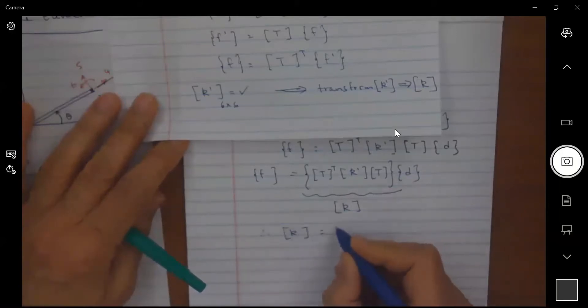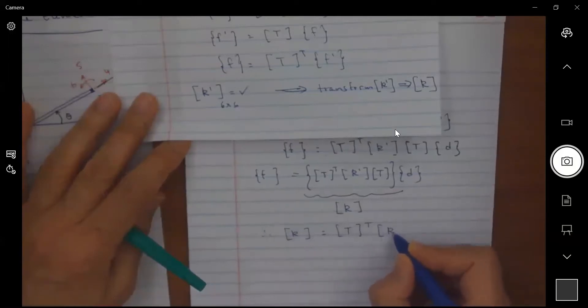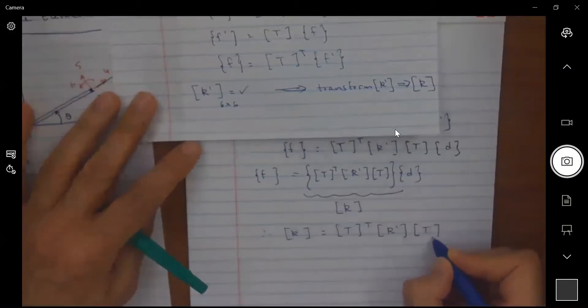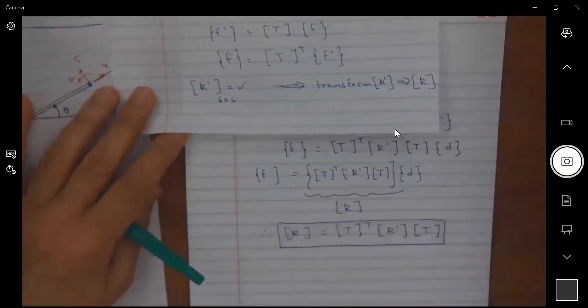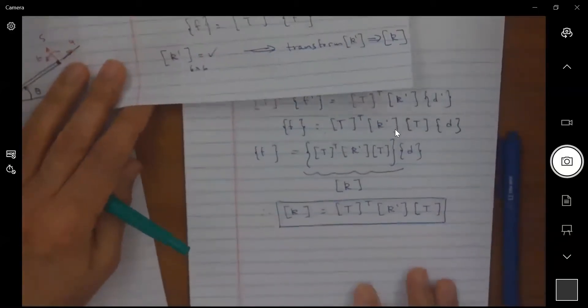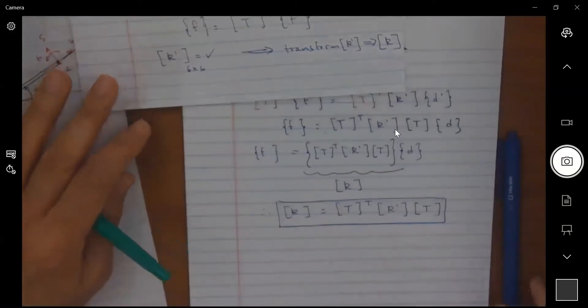So we can conclude from this that k is equal to T transpose times the k prime that we have multiplied by T, which is the same conclusion we found before for the bar member elements. Of course here all of these are six by six matrices.